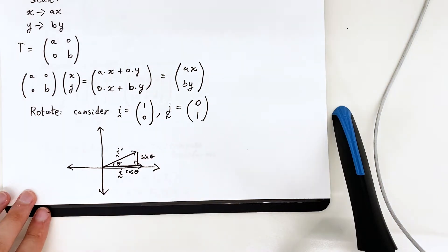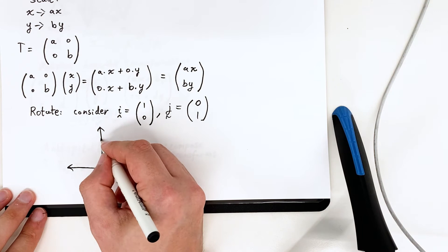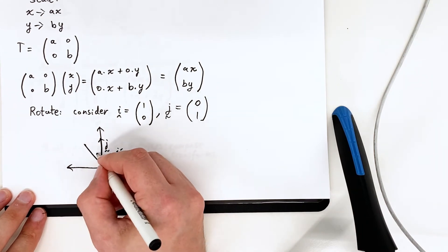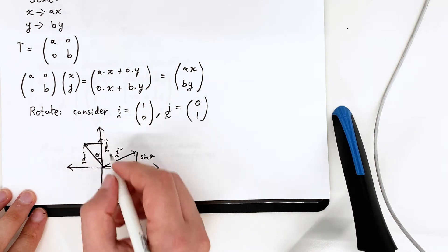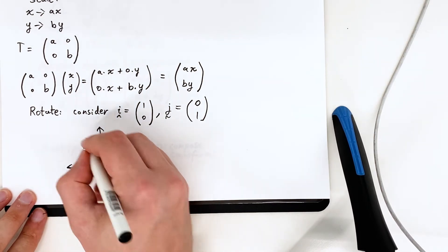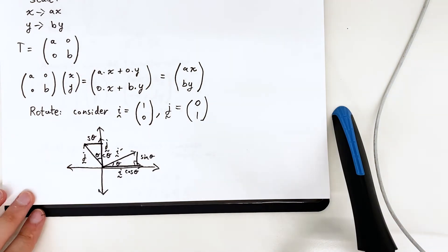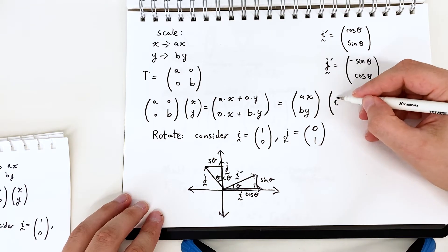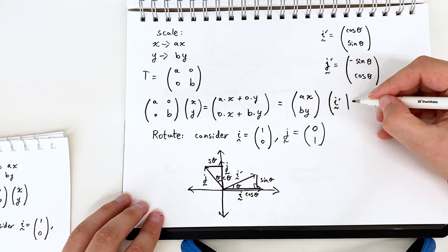We can see i dash goes to cos theta for the x, sine theta for the y. And then j dash is a little trickier but the horizontal component is sine theta and that's pointing in the negative x axis. So it's negative sine for the x component and positive cosine for the y component.